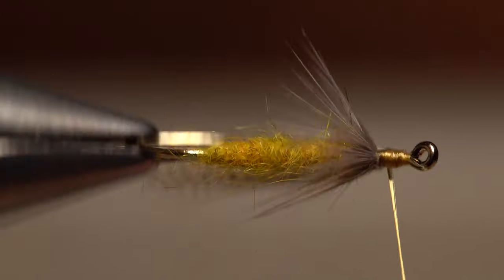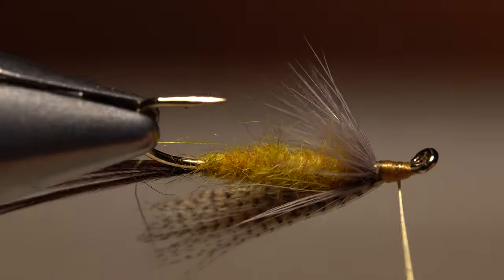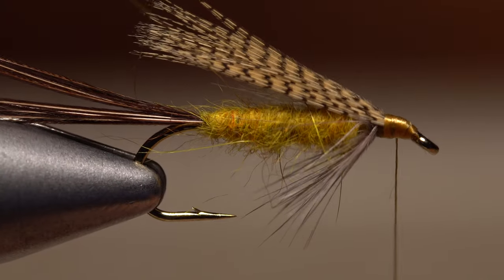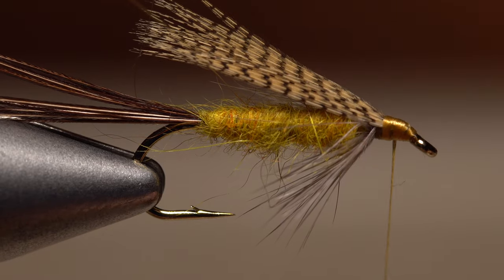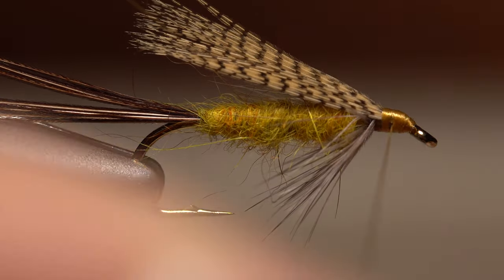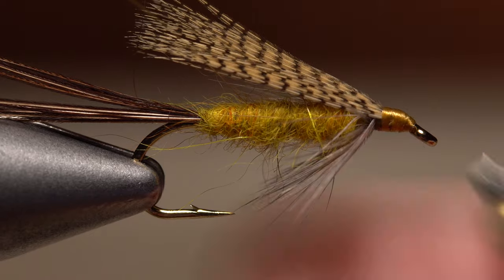Continue taking wraps or turns with your tying thread to build up a nice head on the fly. Do a four or five turn whip finish to secure your tying thread, seat the knot well, and snip or cut your tying thread free.